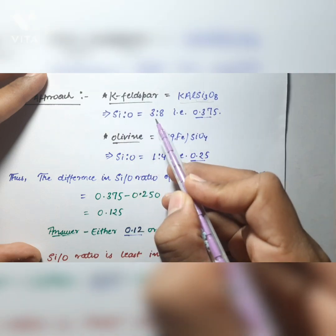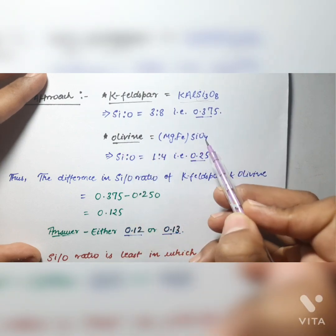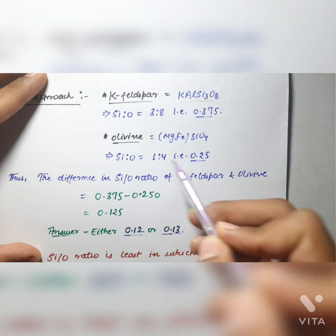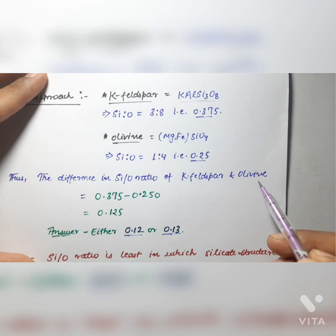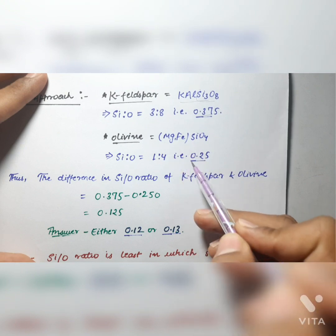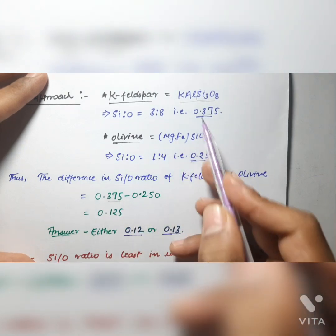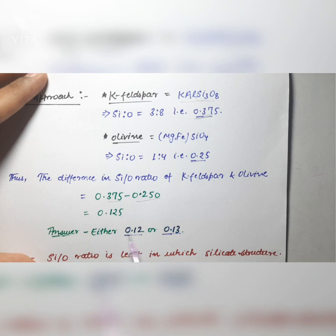So the Si:O ratio of Kefelspar is 3:8, that is 0.375. In olivine, Mg/Fe SiO₄, the Si:O ratio is 1:4, that is 0.25. The difference in Si:O ratio of Kefelspar and olivine is 0.375 minus 0.250, and the answer is 0.125. Since the question asks for two decimal places, the answer should be either 0.12 or 0.13 — both are correct.